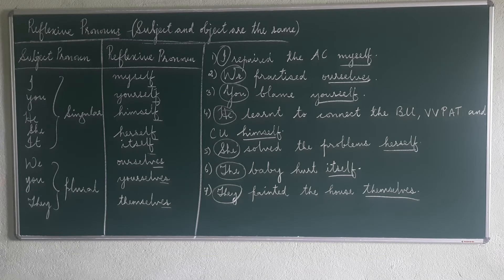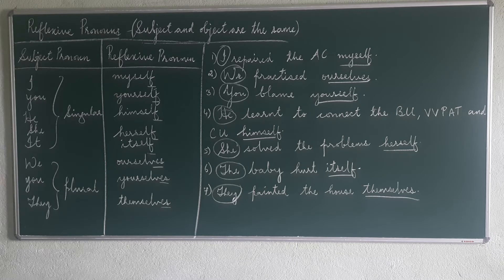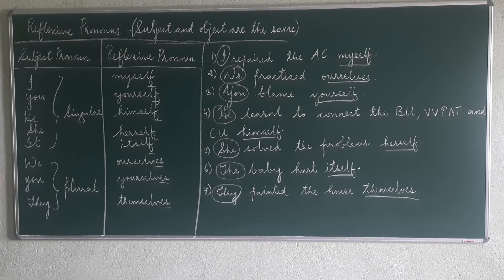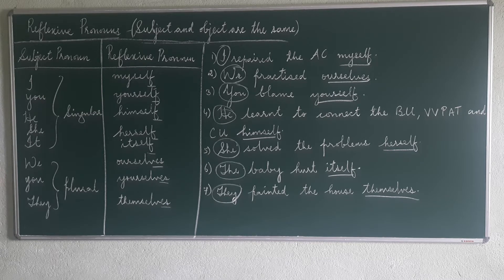The key rule is: the subject and object are the same. Look at exercise number one. 'I' is the subject, 'repet' is the verb, and 'myself' is the object — it is a direct object. So 'I' changes into 'myself'. The subject and object are the same person; there is no difference.